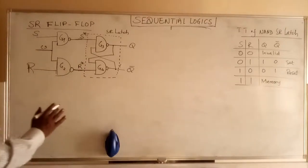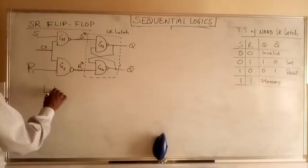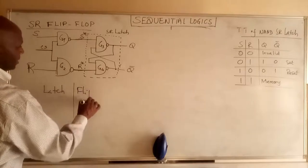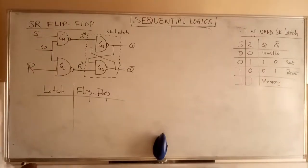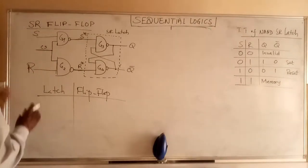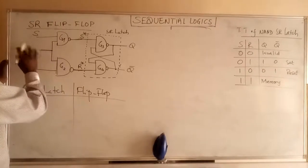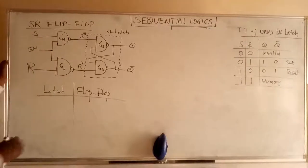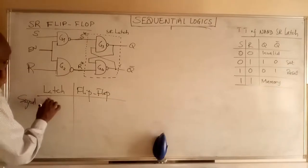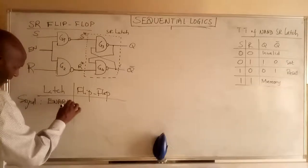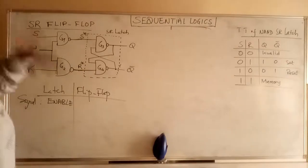Let us describe the difference between a latch and a flip-flop using this same circuit. If we use it as a latch, this control signal will be used as an enable signal — it enables the circuit to function. When enabled, the circuit accepts inputs and operates.